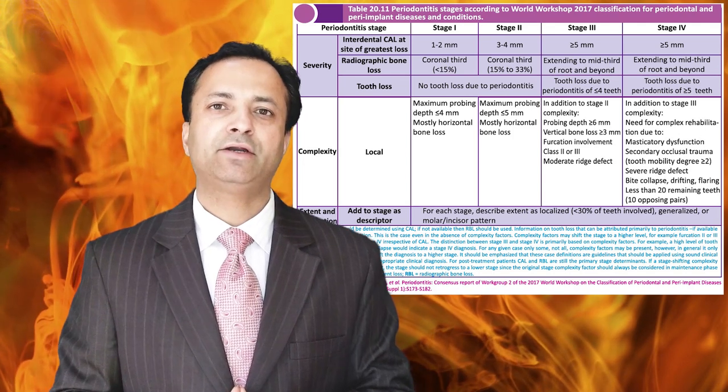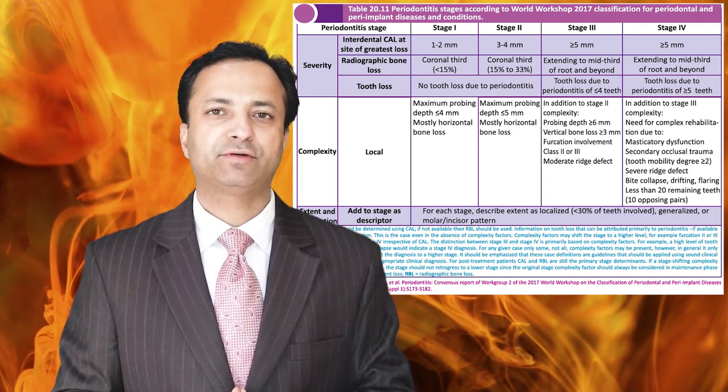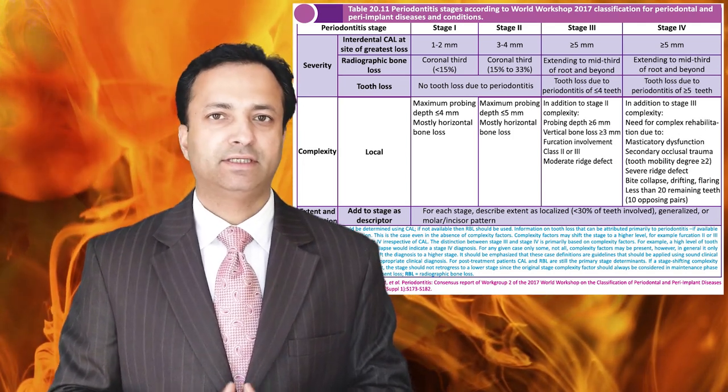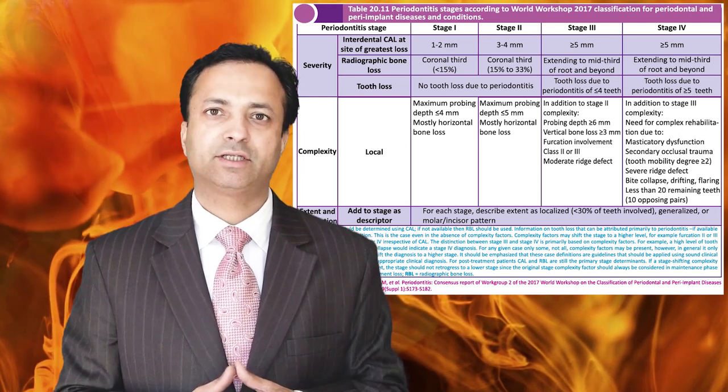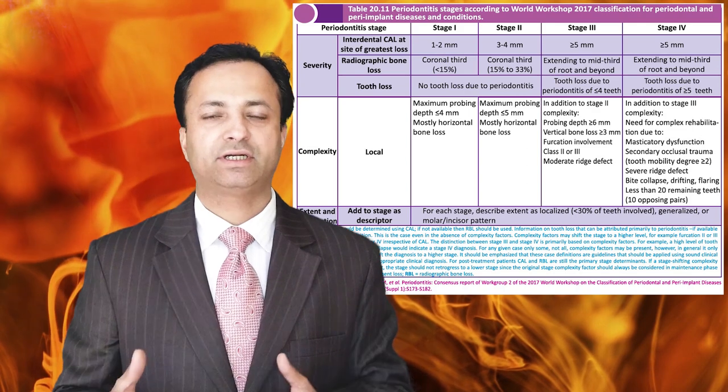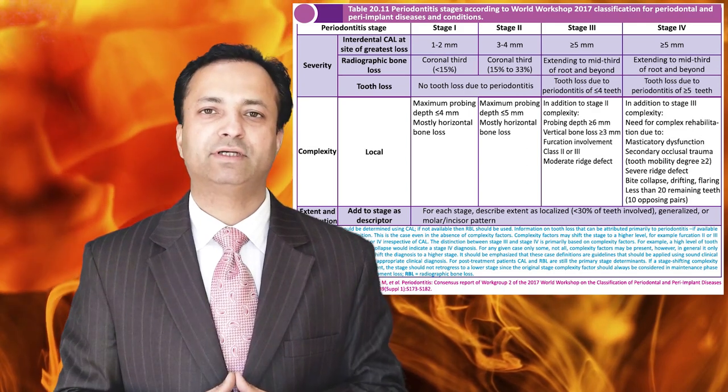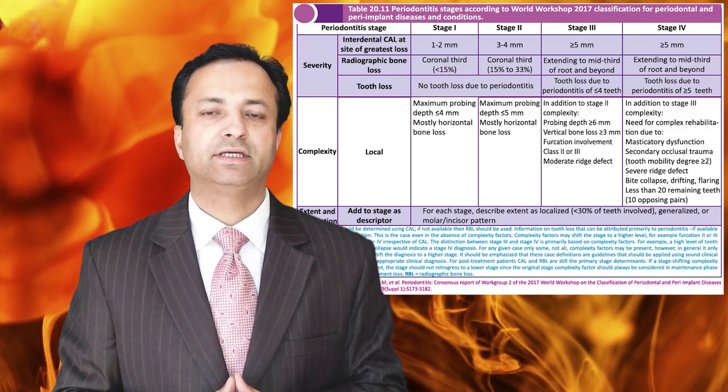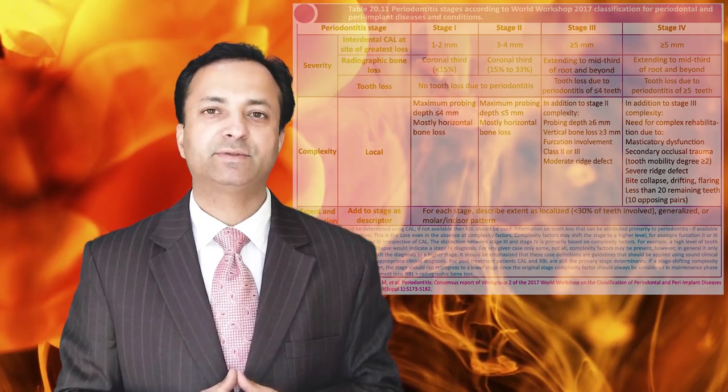The extent and distribution of the disease explains the localized or generalized distribution. Less than 30% is a localized case; more than 30% is a generalized case.